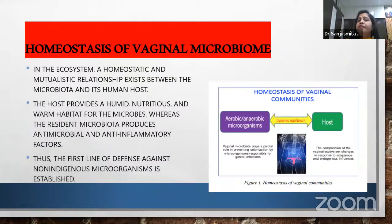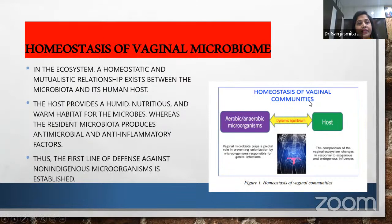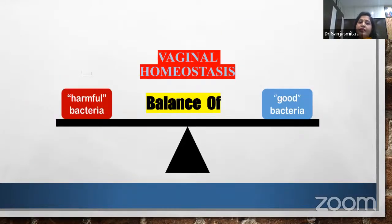Regarding homeostasis: in the ecosystem, a homeostatic and mutualistic relationship exists between the microbiota and the human host. The host provides a humid, nutritious, and warm habitat for the microbes, whereas the resident microbiota produces antimicrobial and anti-inflammatory factors. The host provides the substrate glycogen, and lactobacillus grows along with it, providing anti-microbial and anti-inflammatory factors. Thus, the first line of defense against non-indigenous microorganisms is established by this homeostasis mechanism.